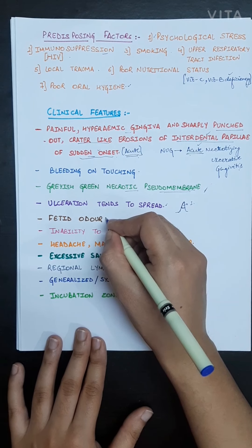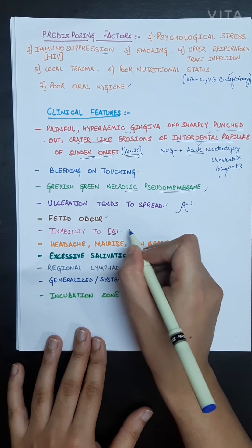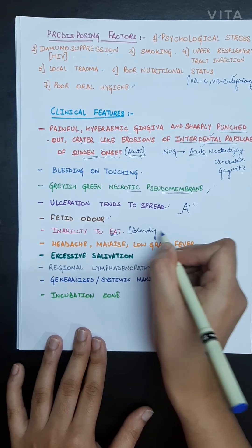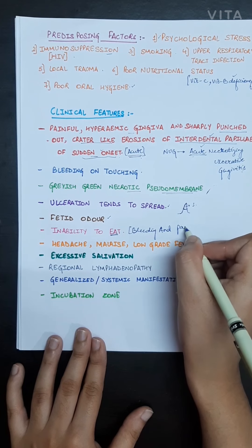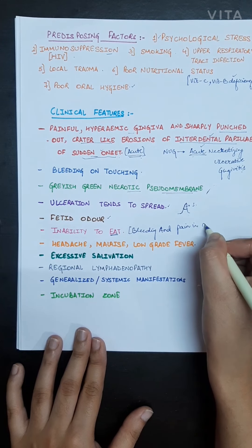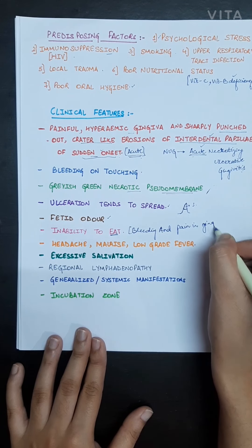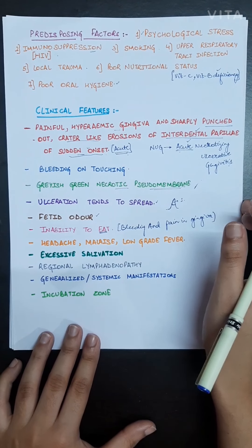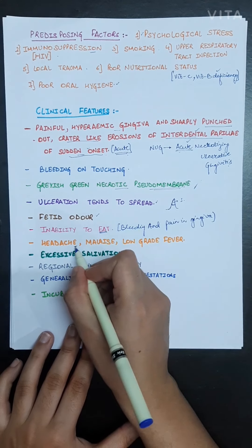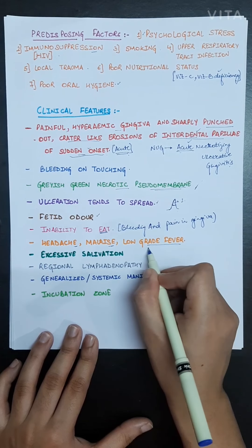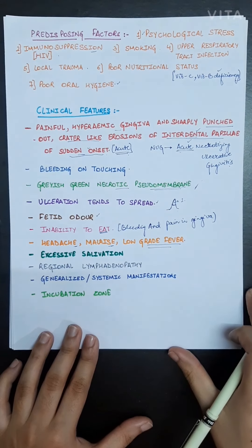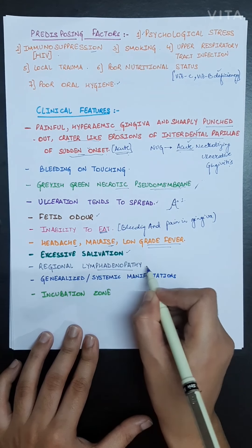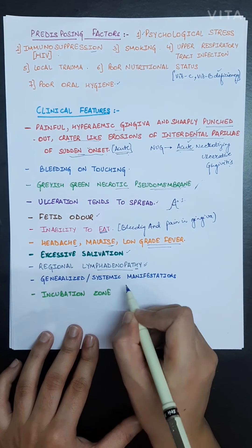The patient will suffer from fetid odor, inability to eat basically due to bleeding and pain in gingiva, so patient will be unable to eat. Headache, malaise, low grade fever will be there as it is an infection. Excessive salivation will be there, regional lymphadenopathy - all the lymph nodes will be inflamed.